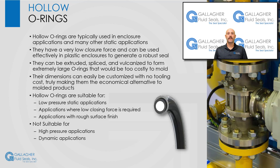Hollow O-rings have long been used in enclosure applications and many other static applications. Because they lack material at their core, hollow O-rings have a very low closure force and can be used effectively in plastic enclosures to generate a robust seal. Hollow O-rings can be extruded, spliced, and vulcanized to form extremely large O-rings that would be too costly to mold. Their dimensions can easily be customized with no tooling cost, truly making them the economical alternative to molded products. These types of seals are often used as an upgrade from a solid, more traditional elastomer where a softer durometer may have been used to seal — particularly valued for equipment that is hard to reach or needs to last a long time between services. This is seen often in telecommunications and electronic equipment installed at the top of high towers and poles.